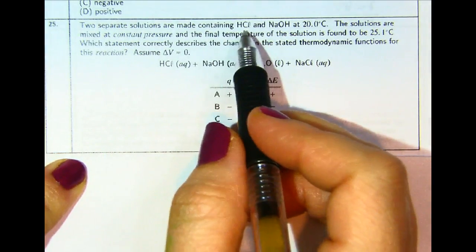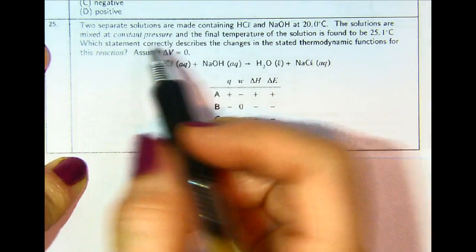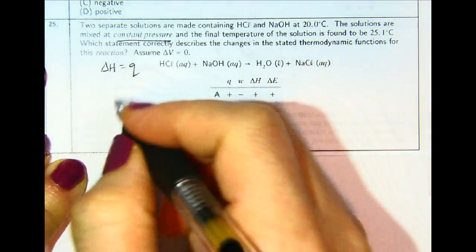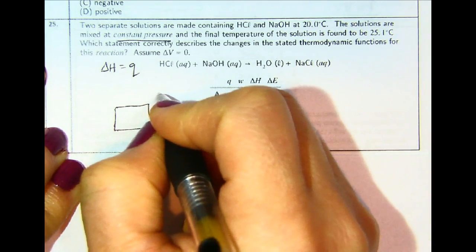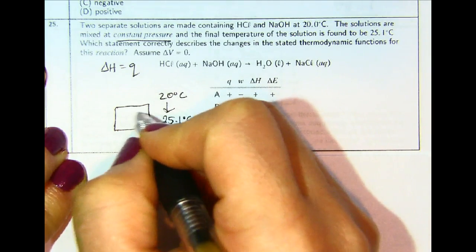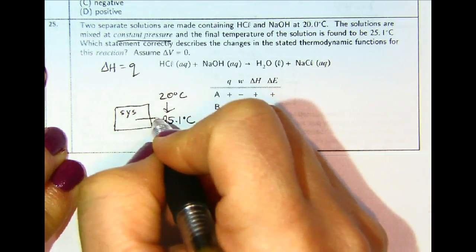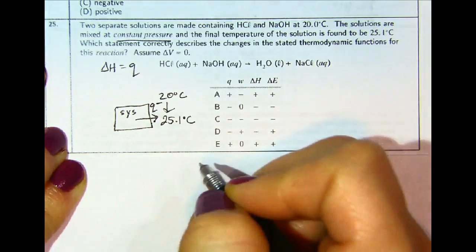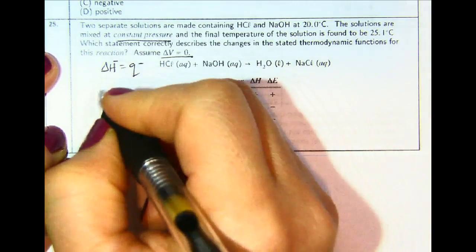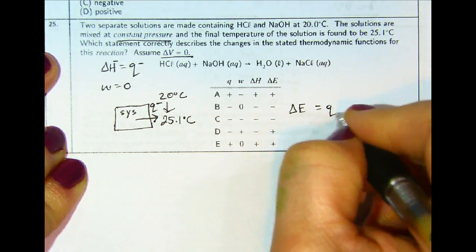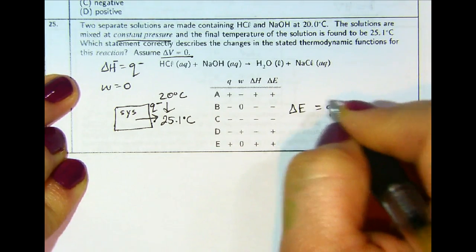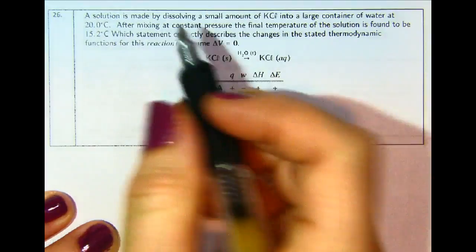Two separate solutions containing HCl and NaOH at 20 degrees are mixed at constant pressure, so delta H equals Q. The final temperature is 25 degrees Celsius — the temperature rose. The reaction between HCl and NaOH must have given off heat to raise the solution temperature, giving a negative Q and therefore negative delta H. Delta V equals zero, so work equals zero, and delta E equals Q. Since Q is negative, delta E is also negative. The answer is letter B.